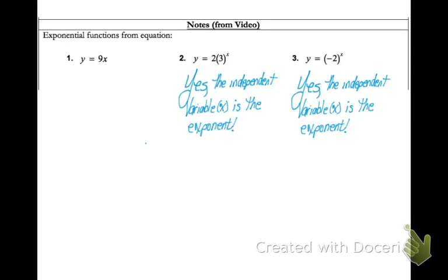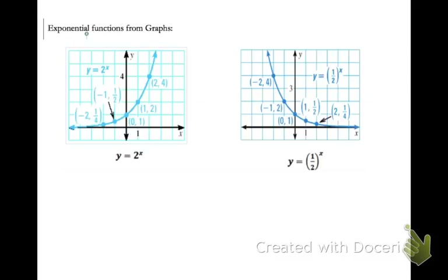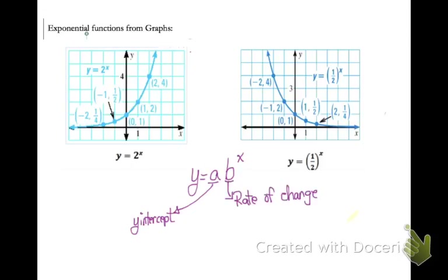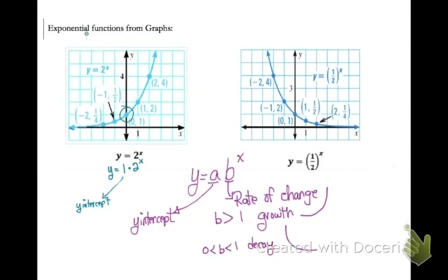Now you know how to tell by looking at an equation if it is exponential — it has to have that x in the exponent. Now looking at a graph of exponential equations, remember we said that in the equation for an exponential function, the a value represents your y-intercept or your starting point on the graph, and your b value is your rate of change. Looking at my first equation, y equals 2 raised to the x power — I don't really have an a value written, but it is actually y equals 1 times 2 raised to the x, because 1 times anything is that thing.